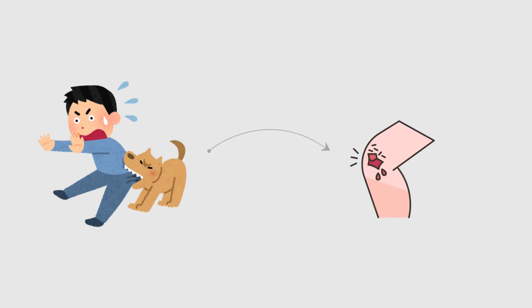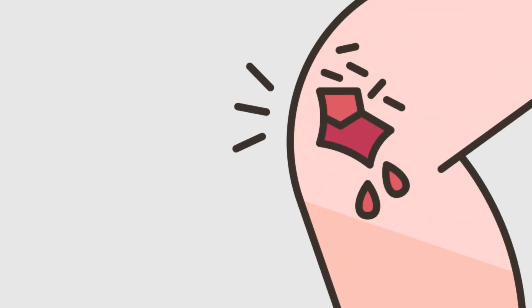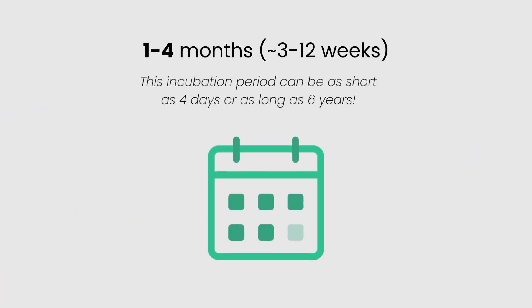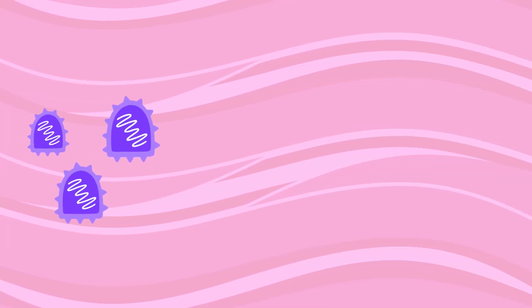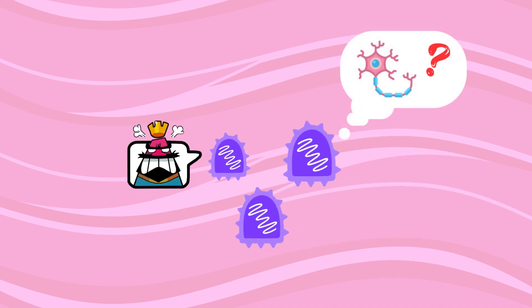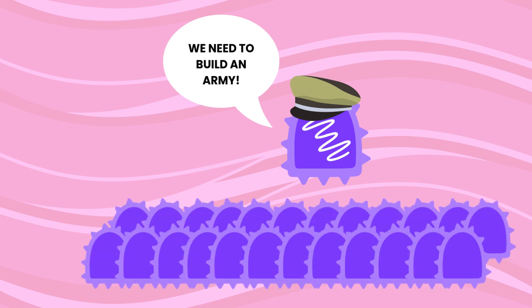Rabies is typically transmitted through the bite of an infected animal, which introduces a small number of virions deep into tissue. After entry, the virus may take one to four months to locate and infect a nerve ending. This delay is a numbers game. The initial viral population is too small to reliably find its target—nerve cells. To overcome this, RABV infects local cells such as myocytes or fibroblasts, hijacking them to use as replication factories to amplify its numbers.